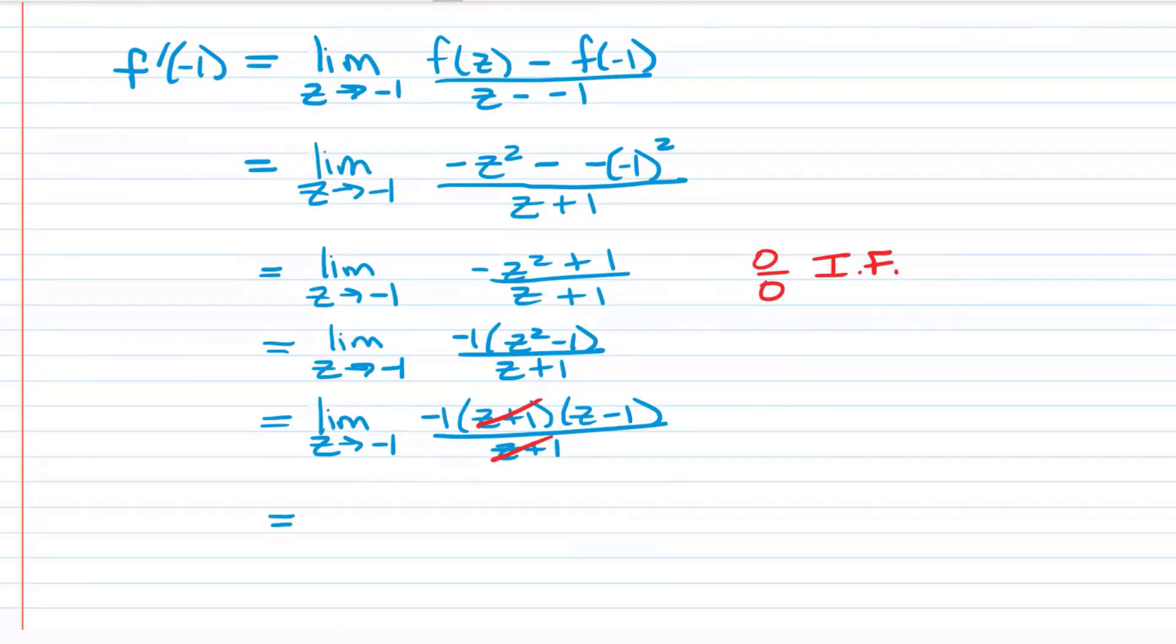So we can say the limit as z approaches negative one of, let's go ahead and distribute that back in, negative z plus one. And now we can plug in. So we have the opposite of negative one plus one. So that's going to be two.